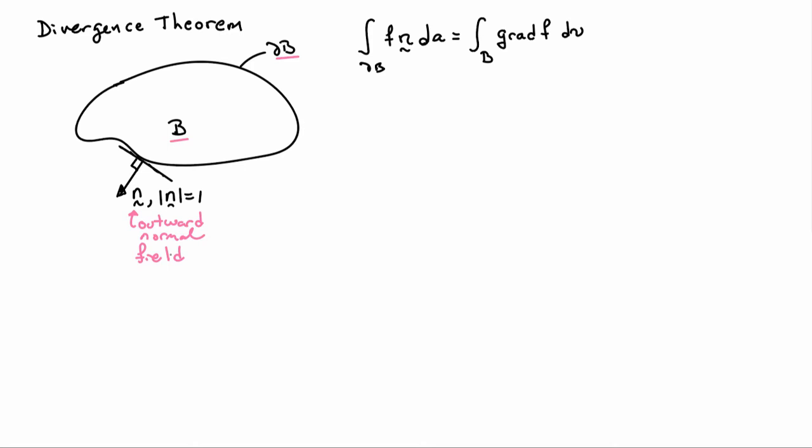So the first one is if I have a scalar function f and I multiply that by the normal field n and I integrate over the surface so the integral f n d a, so d a is the integration area on the surface, that will convert to an integral over the body b of the gradient of f. So we convert from an integral over the surface to an integral over the body and that's for a scalar case so f here is a scalar.